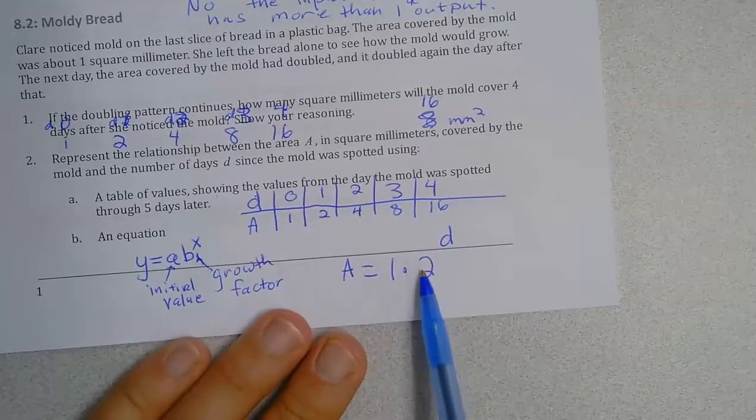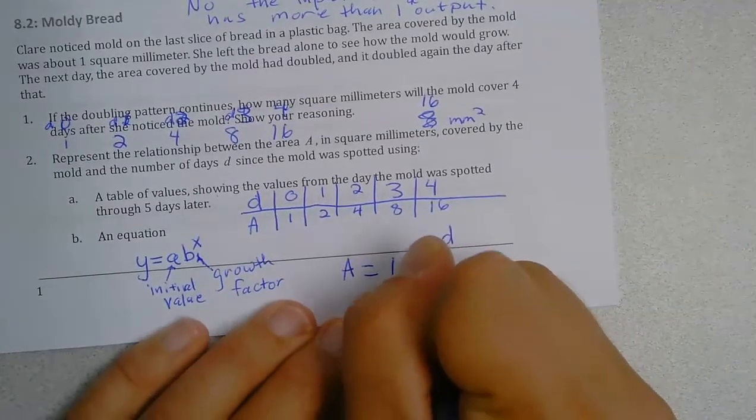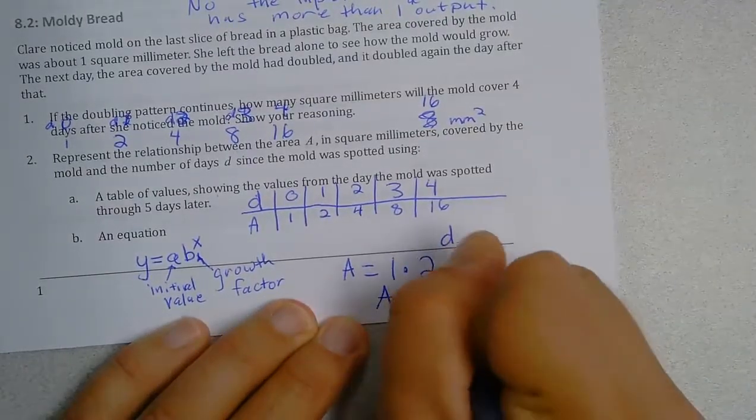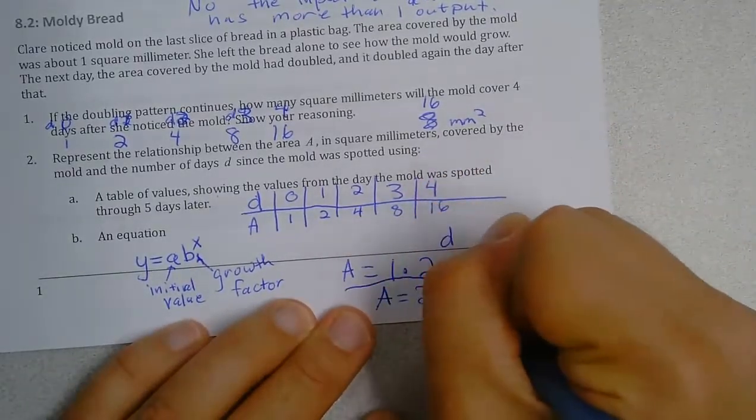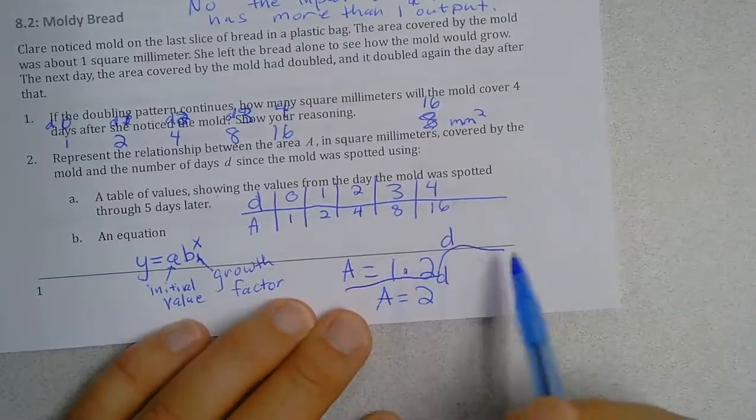And in math when we write one times two to the d we would simplify this as A equals two to the d power. Let me kind of just write a little line there to separate that for you.